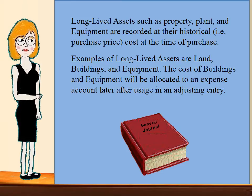Long-lived assets such as property, plant and equipment are recorded at their historical, i.e. purchase price cost, at the time of purchase. Examples of long-lived assets are land, building and equipment. The cost of buildings and equipment will be allocated to an expense account later after usage and an adjusting entry. Land is never allocated; it is simply sold and removed at the time of the sale, otherwise it stays on the books at its historical cost.